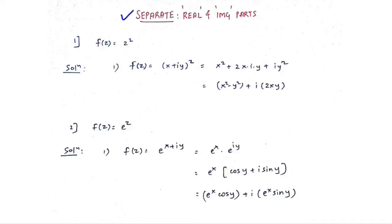Today our topic is separating the real and imaginary part of a function. The function is always a complex variable z, which in rectangular form is x plus iy, and in polar form is r times e raised to i theta. If you don't know about these forms, you can watch the complex variable basics video for ideas on modulus, argument, and tips on this topic.